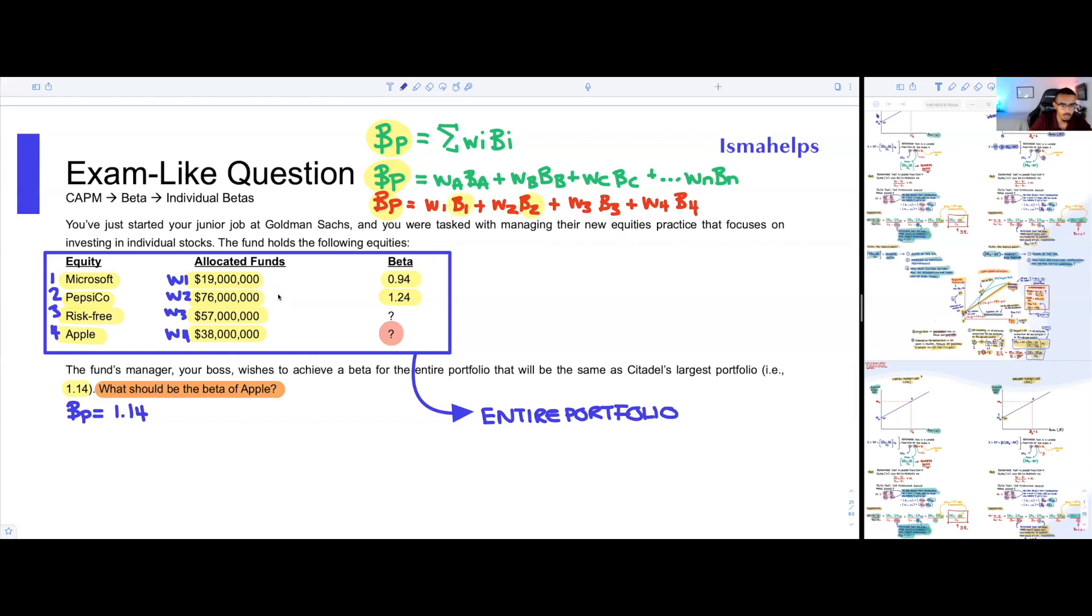You can simply do it by, I guess, I'll write it here. So the sum of the money invested is going to be equal to 19 plus 76 plus 57 plus 38. I'm going to write it down in my calculator here. So we have 19 plus 76 plus 57 plus 38. The reason why I'm only writing it as 19, 76, blah blah, it's because there are millions. So we know that we're going to have $190 million in this portfolio, such that we are going to be able to find the weight for every single one of these.